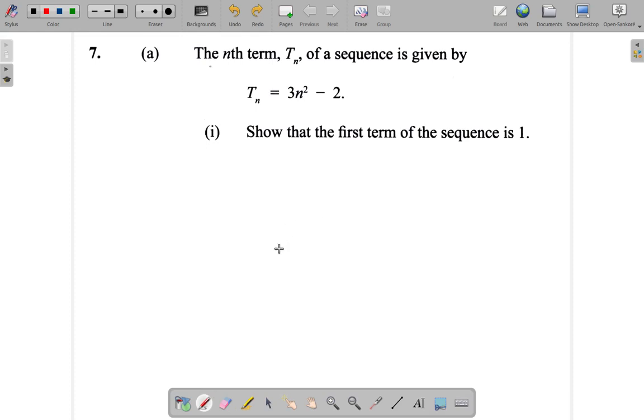Now let's look at this sequence. The nth term of a sequence Tn is equal to 3n² - 2. Show that the first term is 1.